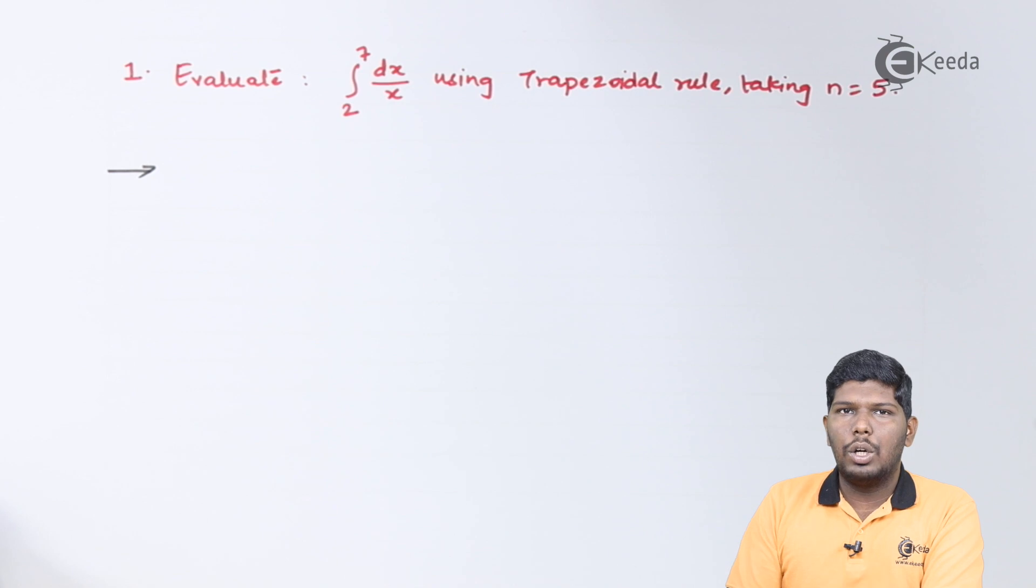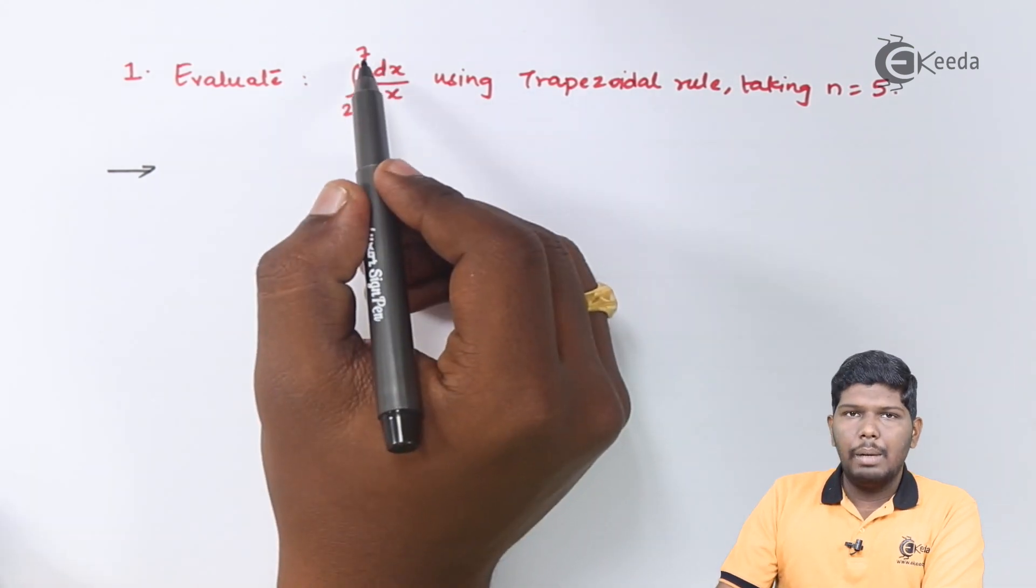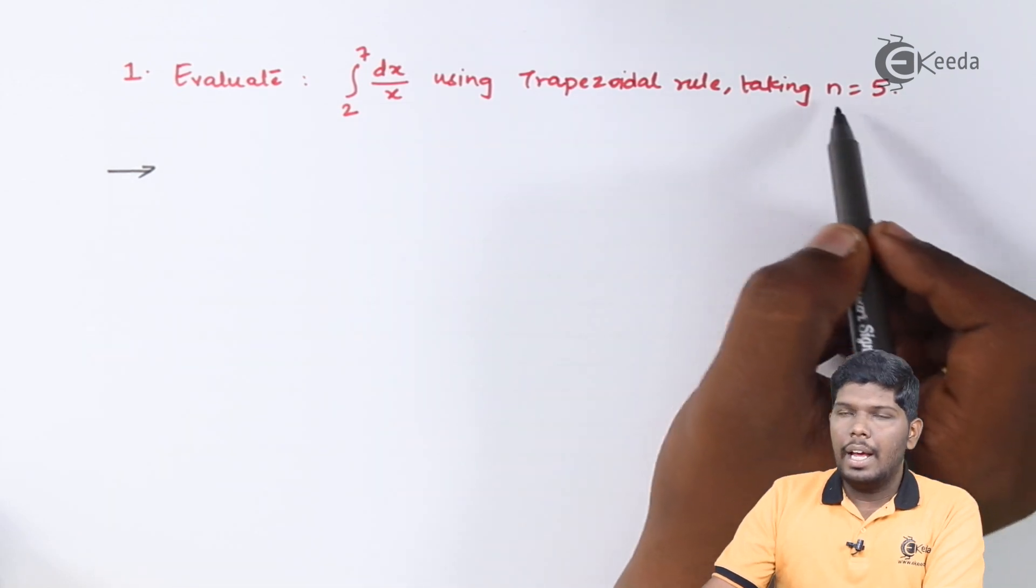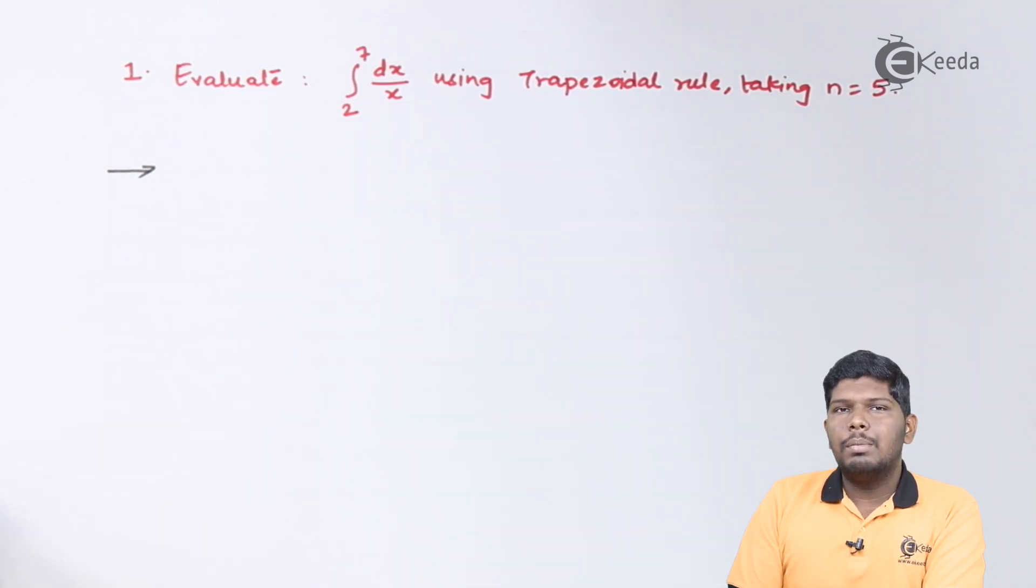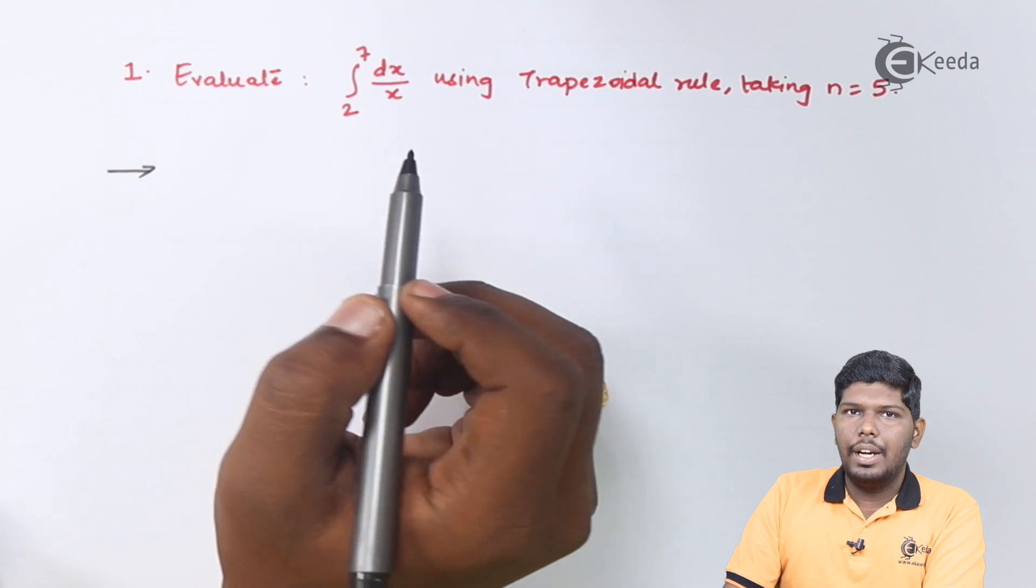Now what is b? b is the upper limit, a is the lower limit, and n is given. Sometimes the value of n is not given but directly h is given. h basically represents the class interval difference. Let us consider this given integral.